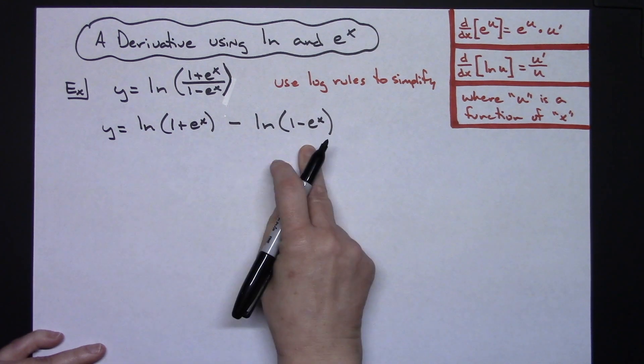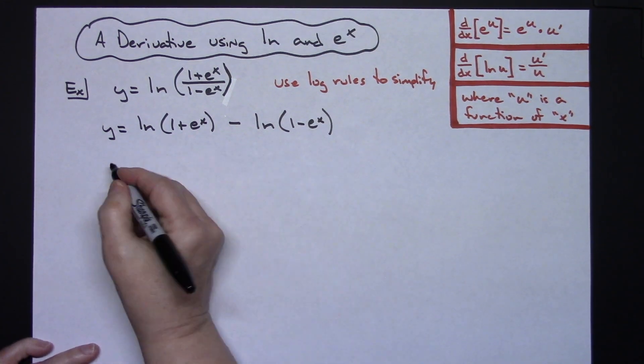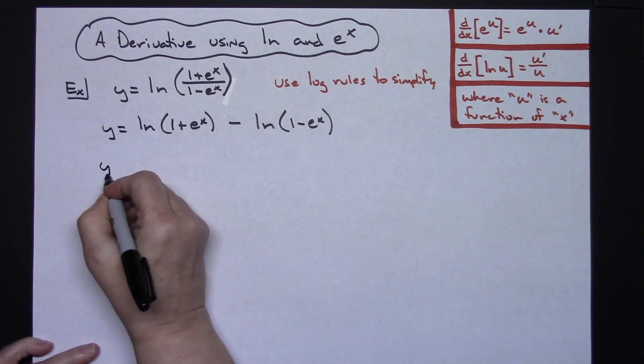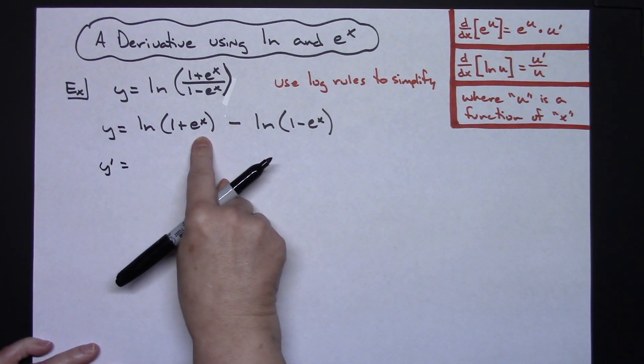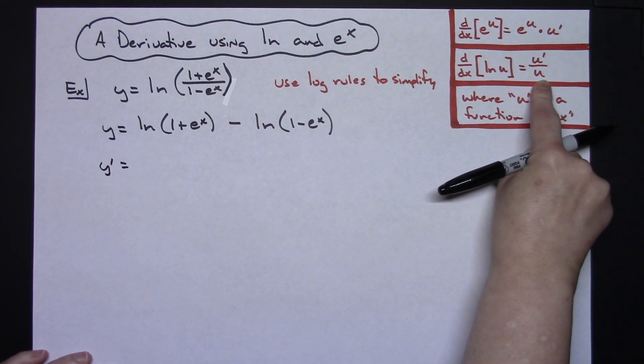Now at this point I'm going to go ahead and take the derivative of both sides. So the derivative of y is going to be y prime. Now I'm actually going to use the u prime over u.